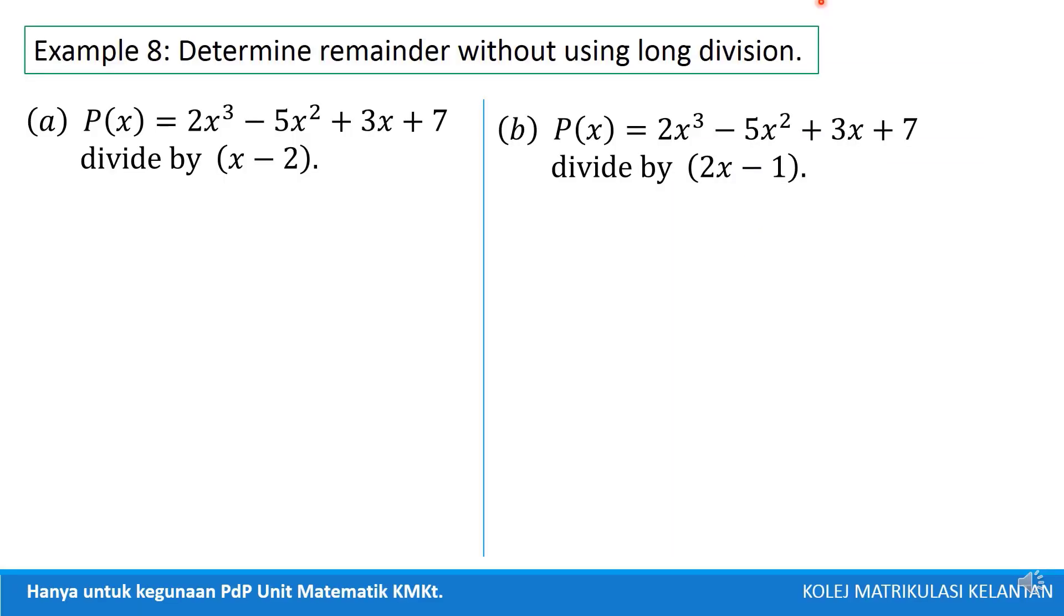For example 8, determine remainder without using long division. By remainder theorem, if we substitute the value of a, then we get the constant remainder. So here, we have a divisor is (x - 2), then the value of x is 2.